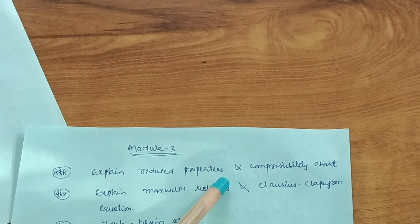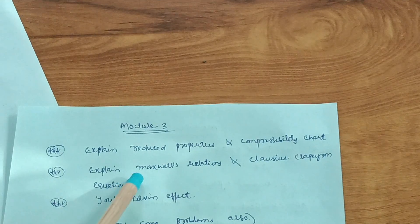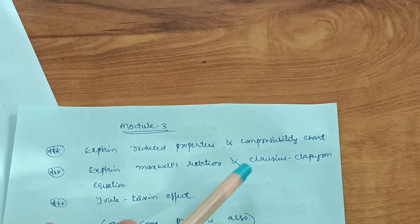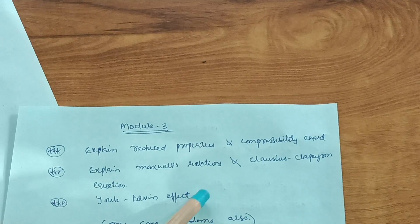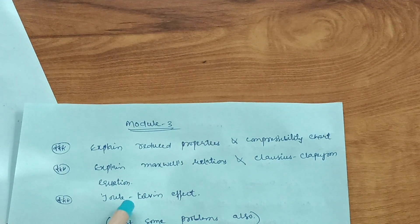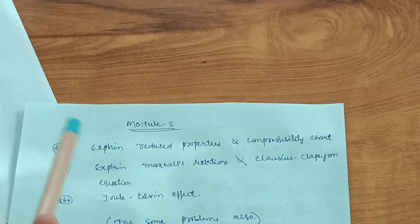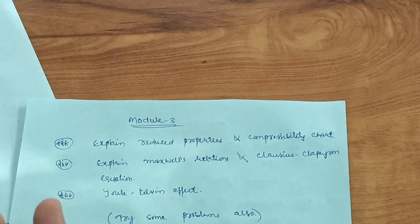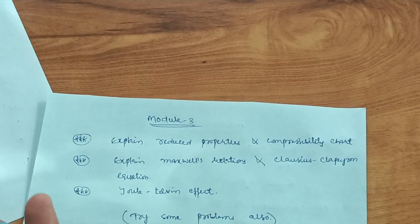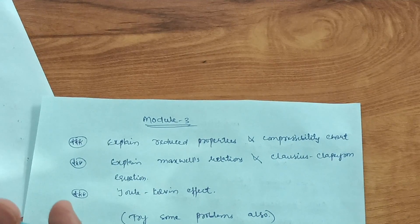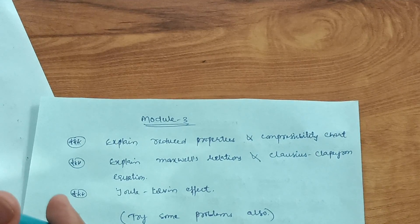Next is Module 3. You have to cover explain reduced properties and compressibility chart, explain Maxwell's relationships and Clausius-Clapeyron equation. Next is Joule-Kelvin effect. You also have to try some problems in this module as it is not purely theory based.